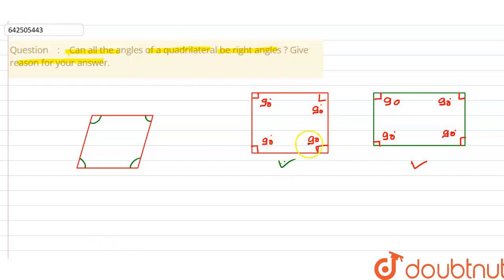So the given statement — that all the angles of a quadrilateral can be right angles — is true for a square as well as a rectangle. Thank you.